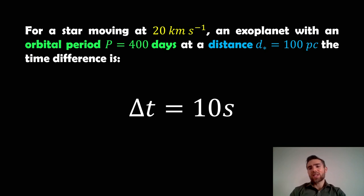We take an exoplanet that has an orbital period of about 400 days, a little bit longer than Earth, and at a distance of about 100 parsecs. And we get a change in the timing of the transit of about 10 seconds. So that just gives you an idea. It's not a huge amount. It is measurable.